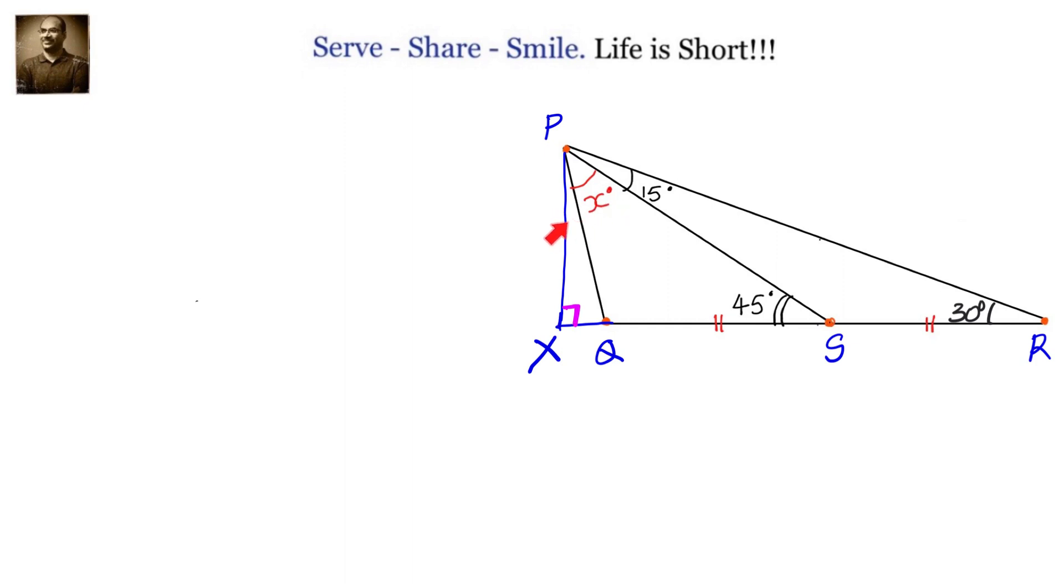Now we have to calculate the value of angle X. So we know that PXS is a right angle triangle with 45-45-90. So the angle XPQ will be 45 minus X.